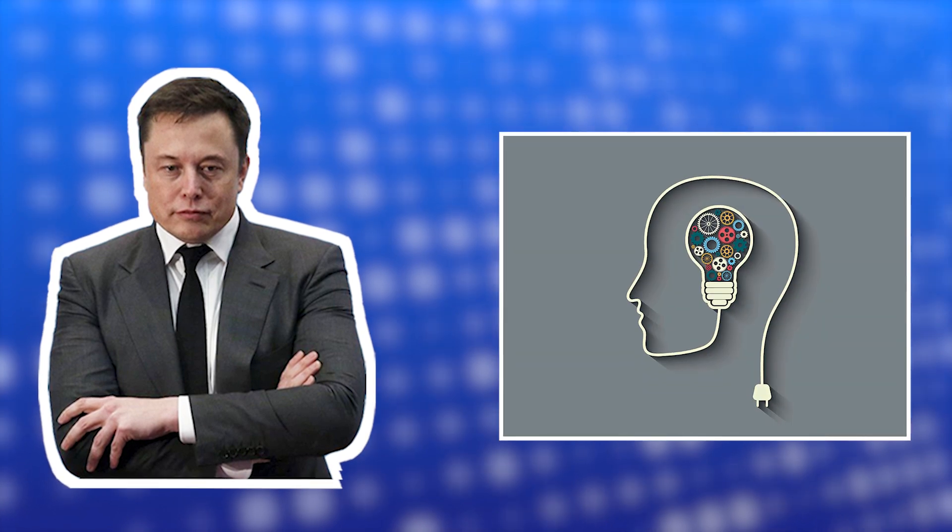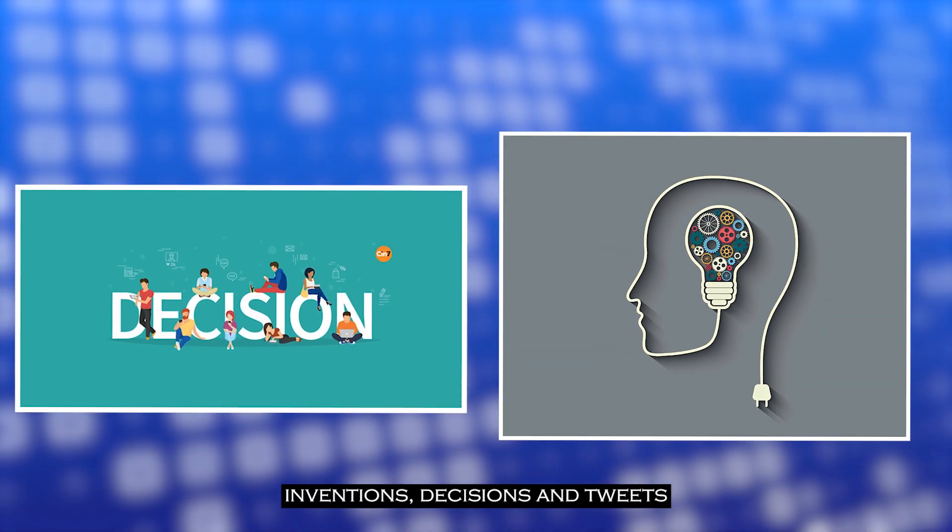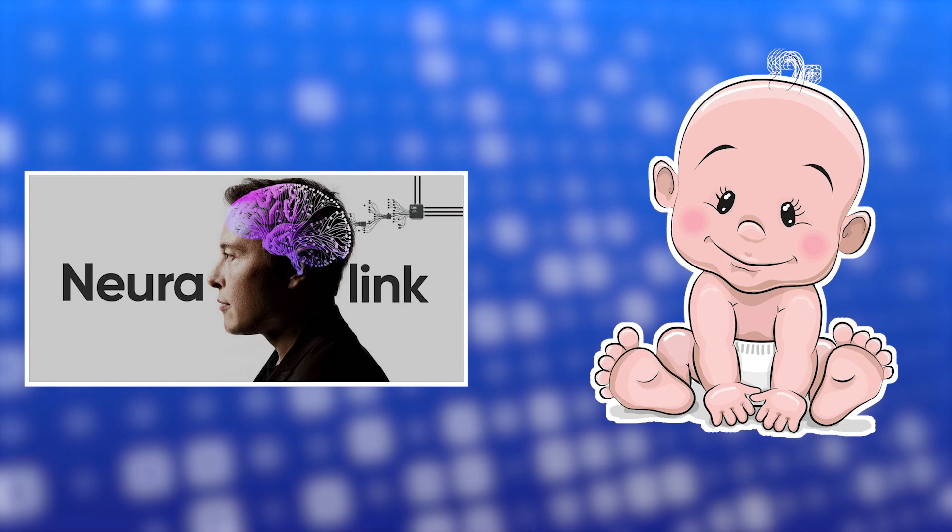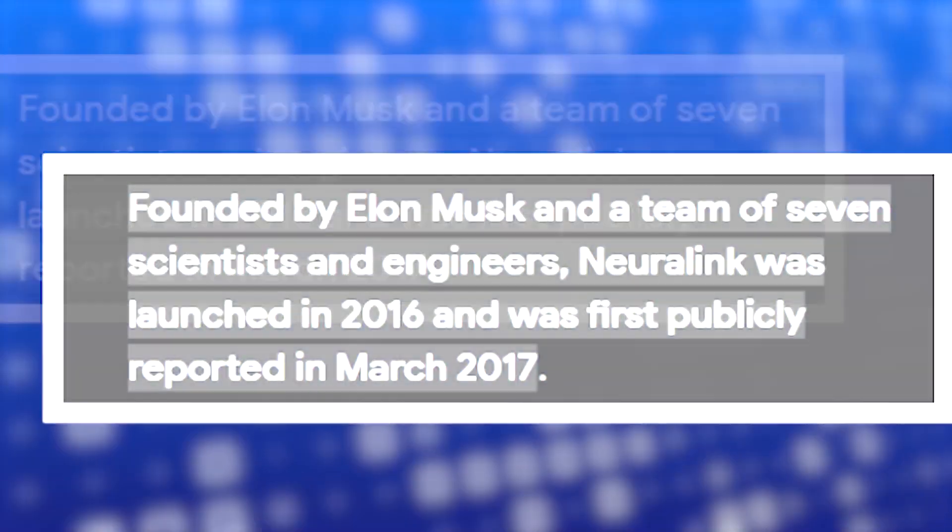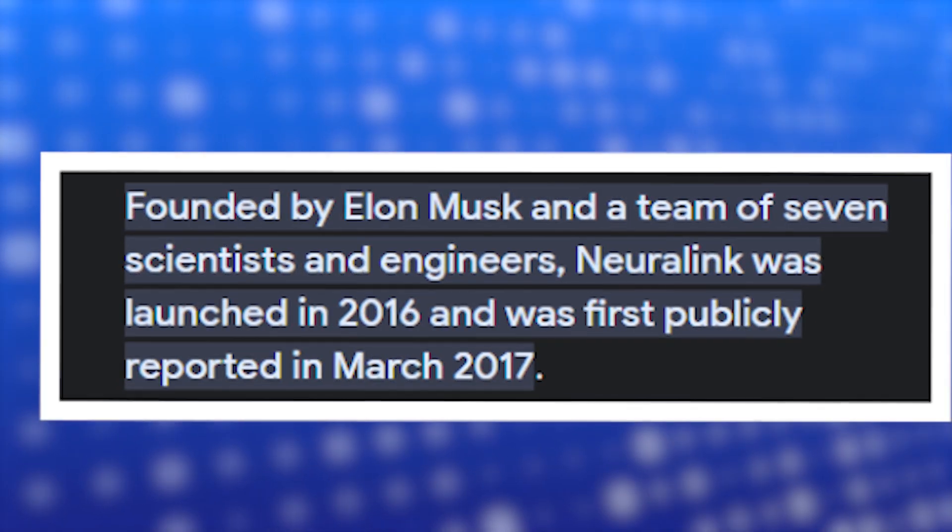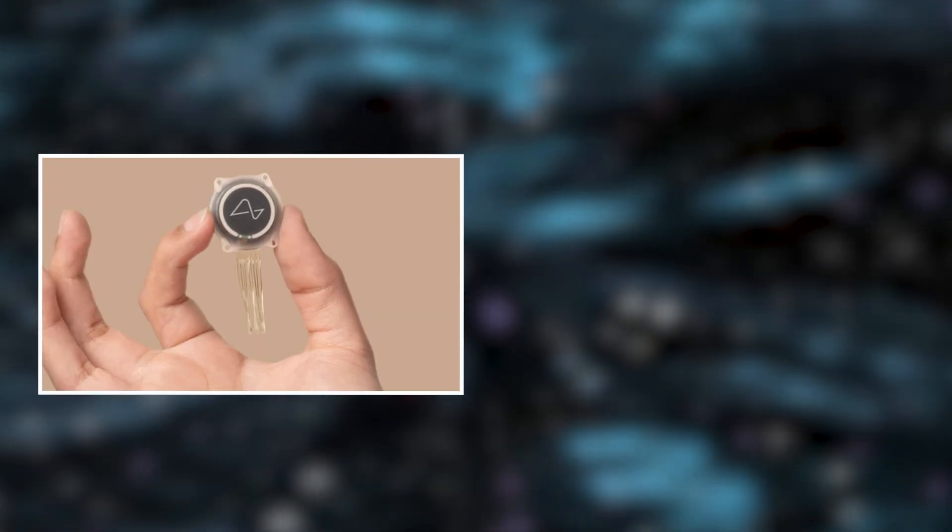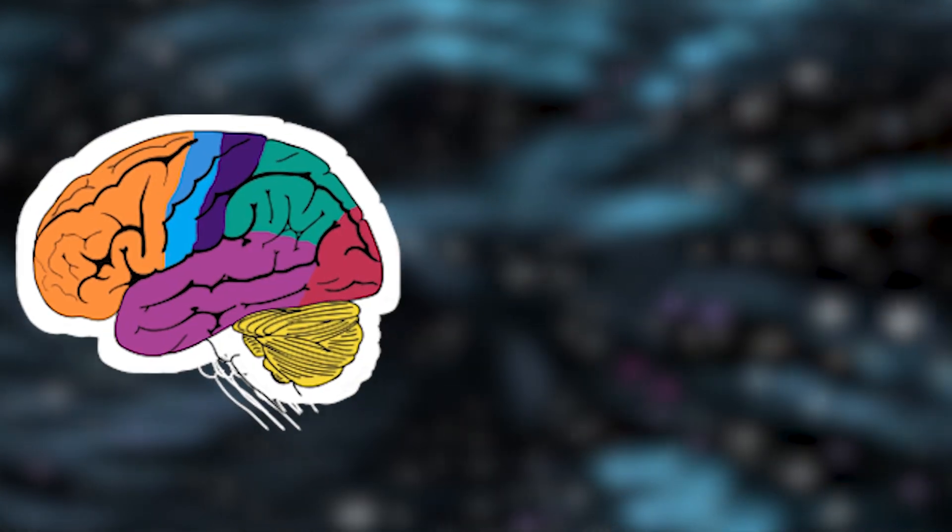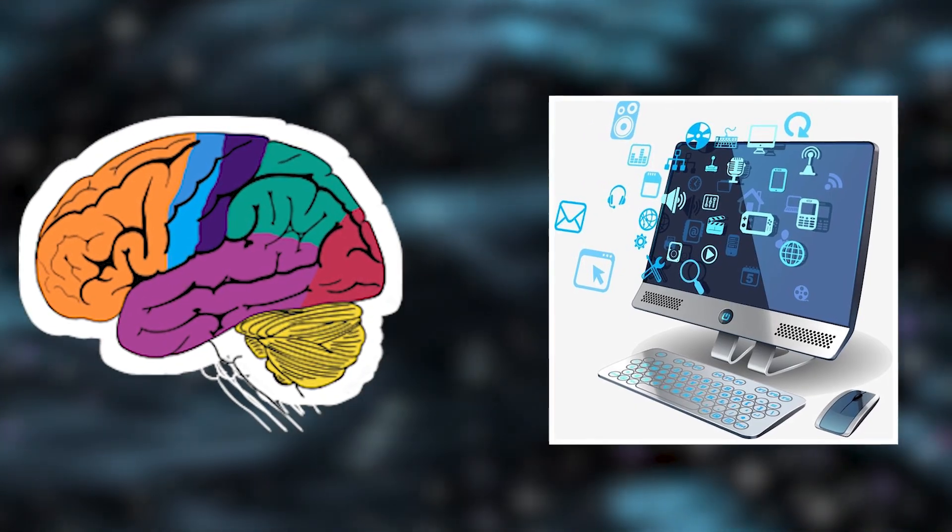Elon Musk has always turned heads with his inventions, decisions, and tweets. And Neuralink is also Elon Musk's baby. For the unknown, Neuralink Corporation is a neurotechnology company founded by Elon Musk in July 2016. The goal of Neuralink is to create direct communication pathways between the human brain and external devices or computers.